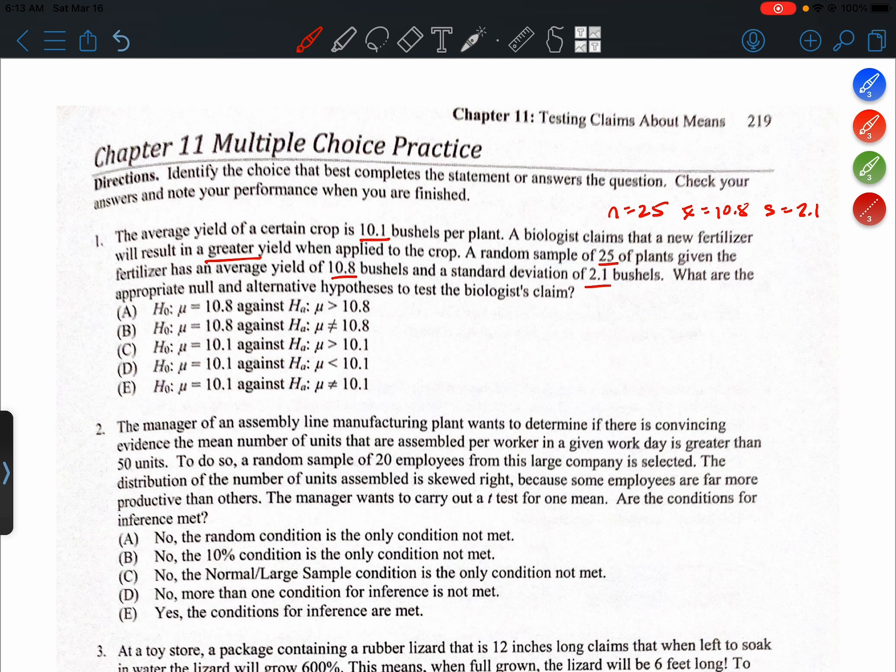So when we write our hypotheses, we always write our hypotheses about the parameter, okay? So we don't write it about the statistic. Alright, so I'm already going to eliminate options A and B.